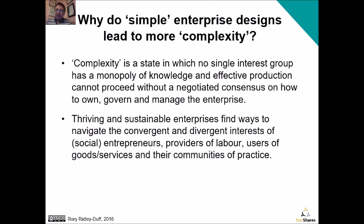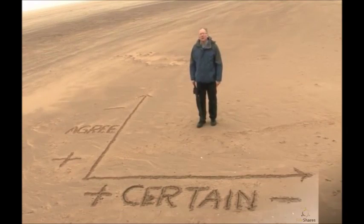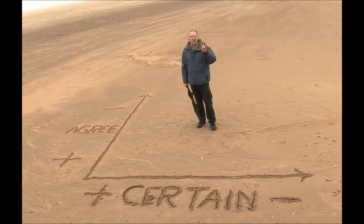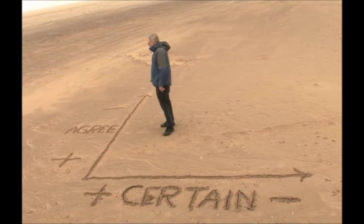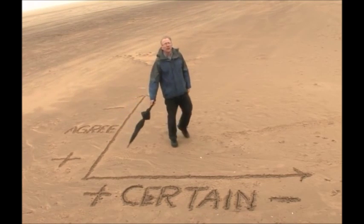Entrepreneurs, providers of labour and the users of goods and services don't necessarily share interests, and they all live in a different community of practice. So what I'm now going to do is play a short video about Ralph Stacey's complexity theory and how simple organisations try to run themselves in a way that does not address complexity. All Ralph Stacey did — and it was absolutely brilliant — was combine two axes: an axis of agreement and an axis of certainty.